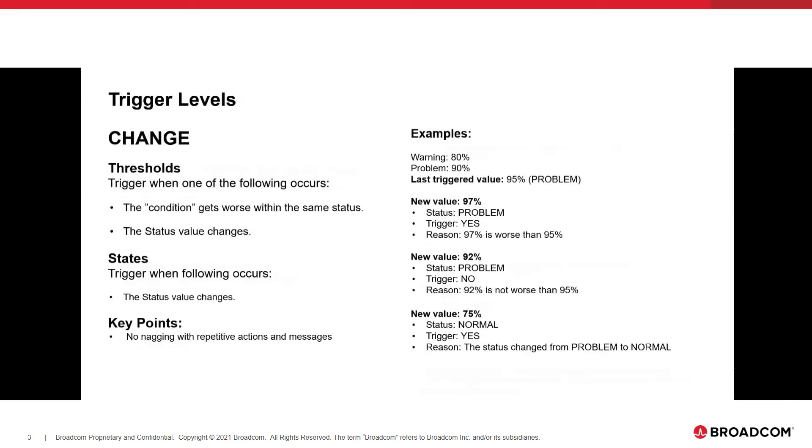Moving on to trigger levels, and again, this is kind of what happens after we do the evaluation. What do you want me to tell you, how do you want me to cause a trigger to happen? A threshold, when it triggers, will trigger when one of the following occurs, and this is specific to our trigger level known as change. The idea here is, tell me when the evaluation changed.